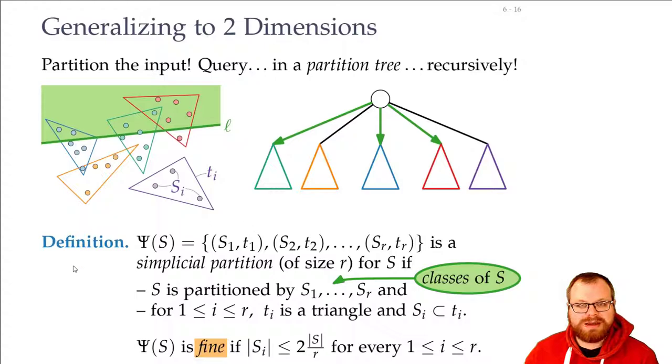We say that a partition is fine if this formula here holds. In every of these classes, there are at most twice as many points as the average. So if we have 100 points and we want to have a partition of size 10, then all these classes can have at most 20 points. That's the one condition we need—they should not be too large, because otherwise, if we go into the recursion, it can take still a long time.